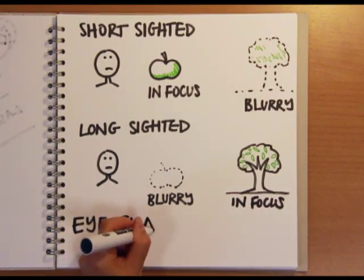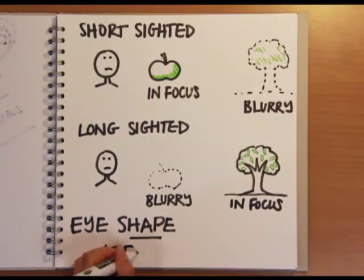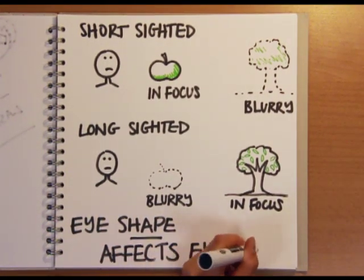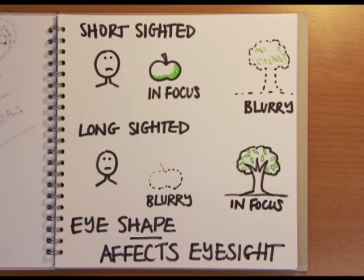The reason some people are short sighted and some people are long sighted is all down to the shape of their eyes and laser eye surgery corrects their vision by changing the shape of their eyes.